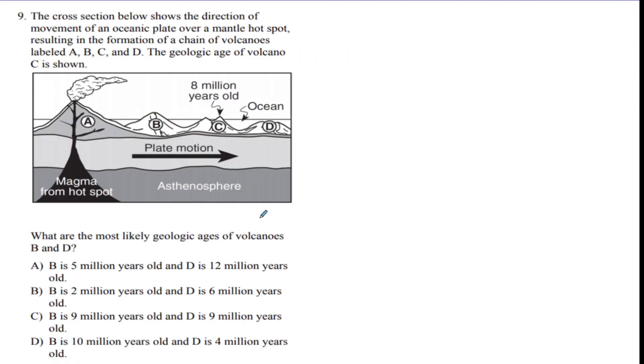Number nine, the cross-section below shows the direction of movements of a plate over a hotspot resulting in a chain of volcanoes labeled A, B, C, and D. The age of C is shown as eight million years. So they want you to predict what the ages of B and D volcano would be. So remember, here's the hotspot. So this is the newest one. So as you go out, it gets older and older. So B should be less than eight, and D should be more than eight. So it looks like B is five and D is twelve. That hits it. So A is the best answer.